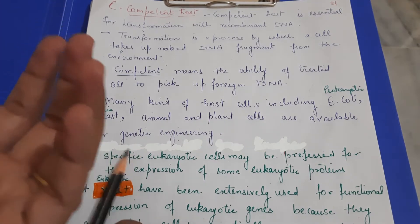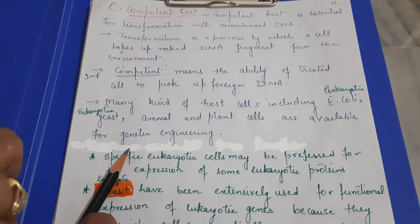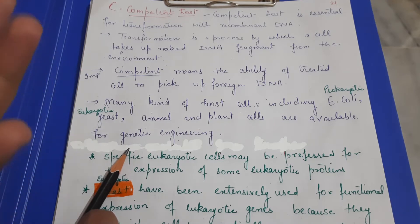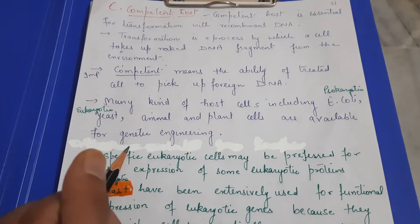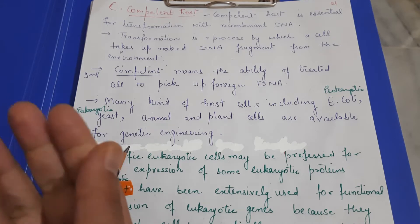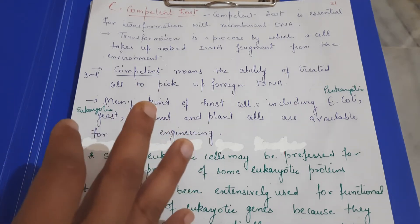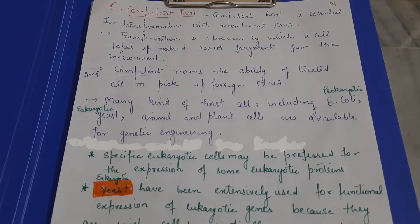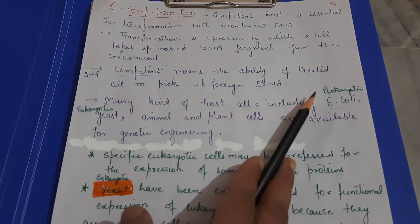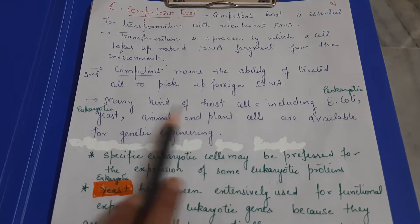The recombinant DNA is then introduced into a suitable host, either with the help of a vector or without it using vectorless methods. The word 'competent' refers to the ability of a host to allow foreign DNA to enter it. Transformation is the process where a cell takes up naked DNA fragments from the environment. If we talk about prokaryotes, E. coli is the best host; for eukaryotes, yeast, animal cells, and plant cells act as competent hosts.